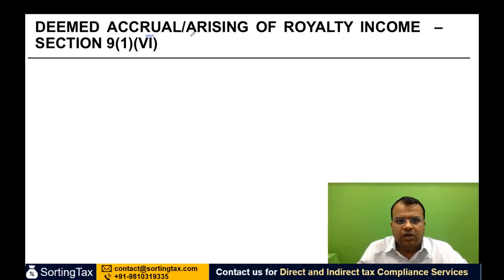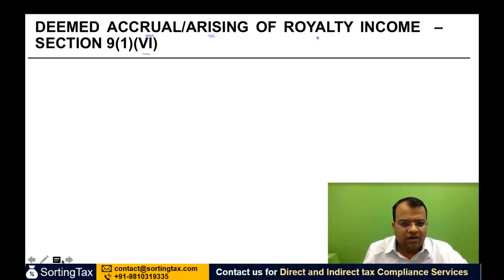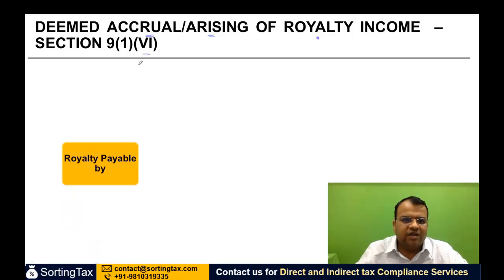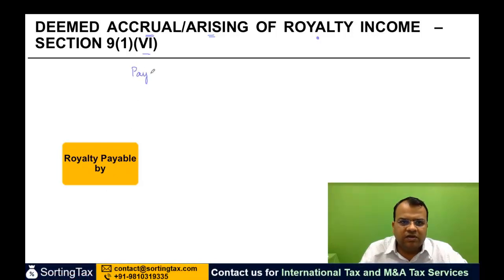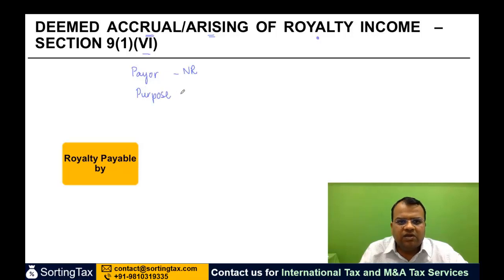Let us look at the deemed accrual and arising of royalty income. The provisions are given in section 9(1)(6). Just like in the case of interest, even royalty income, whether it deems to be accrued or arising in India, is governed by two key factors: who is the person paying the royalty to the non-resident, and what is the purpose for which such royalty income has been paid to the non-resident.